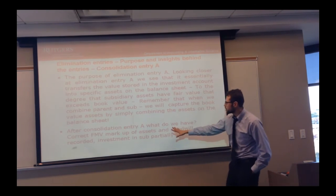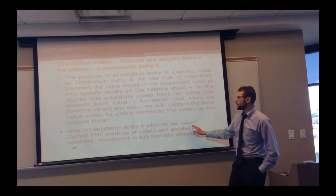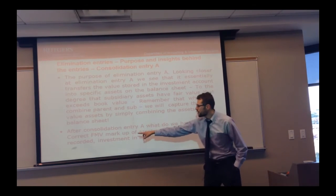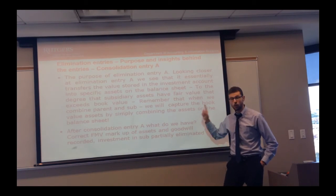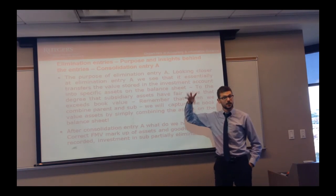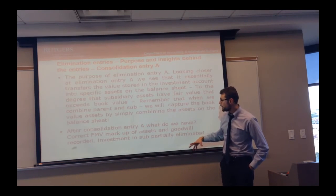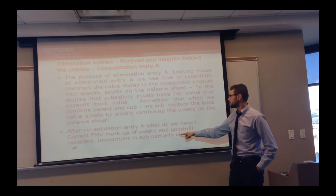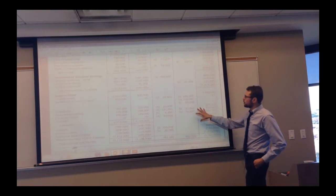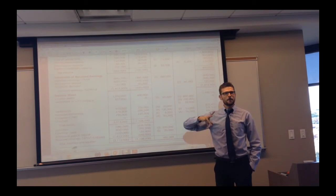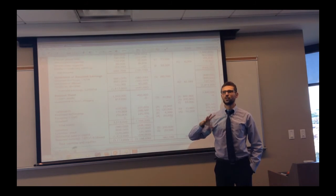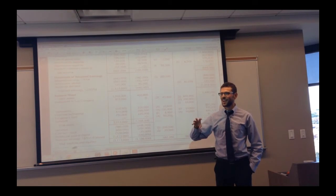After the consolidation entry is performed, we have the correct fair market value markup of the assets and goodwill recorded on the parent's balance sheet. Everything is now in. Investment in sub is partially eliminated. Now I want to go over journal entry S — the stock entry.